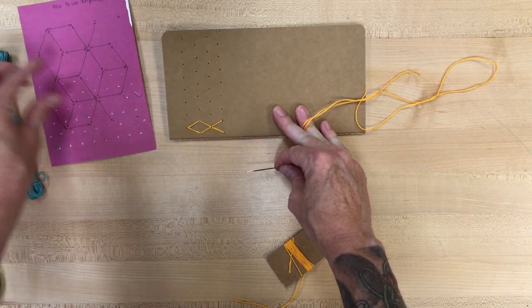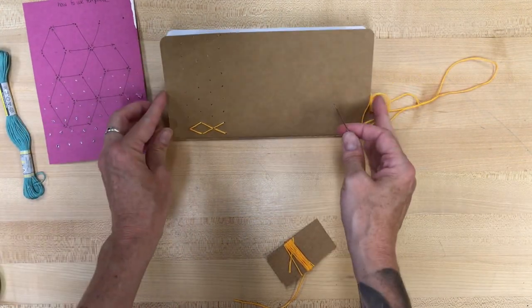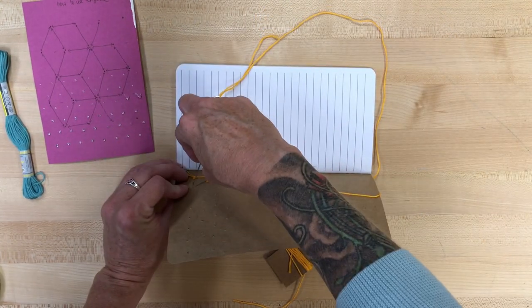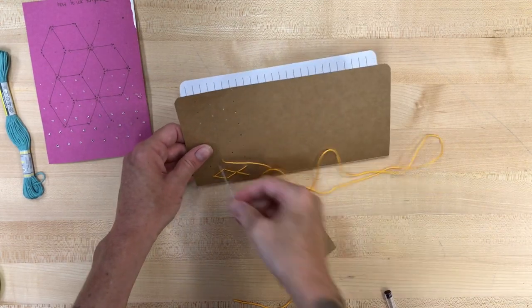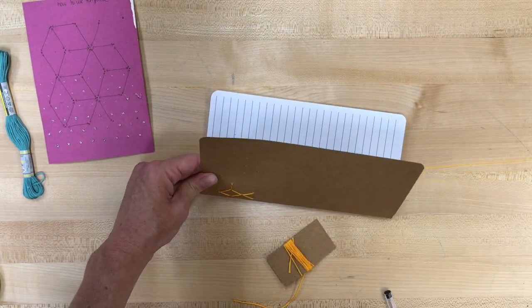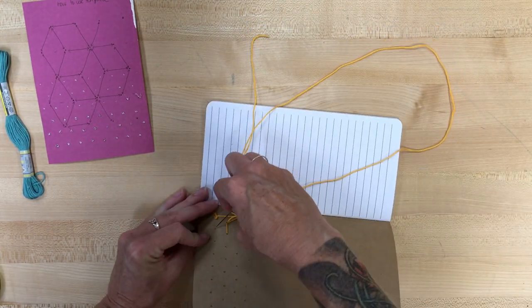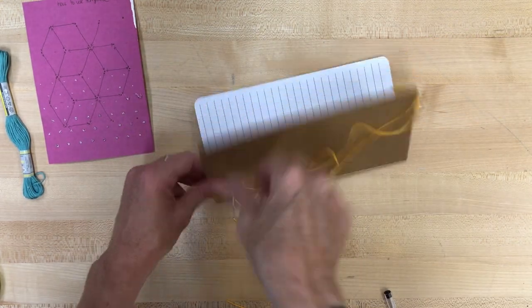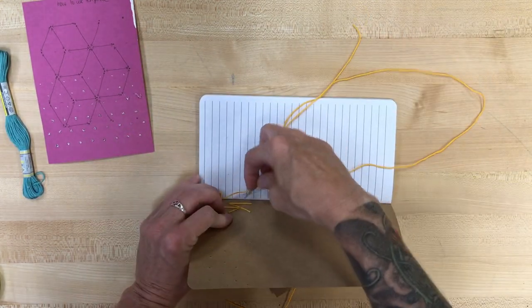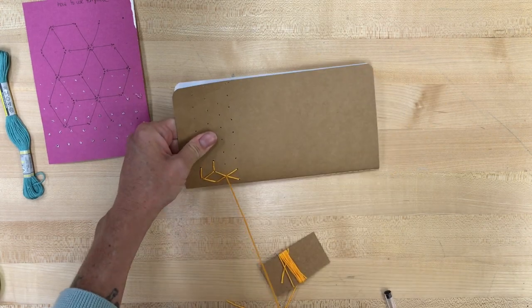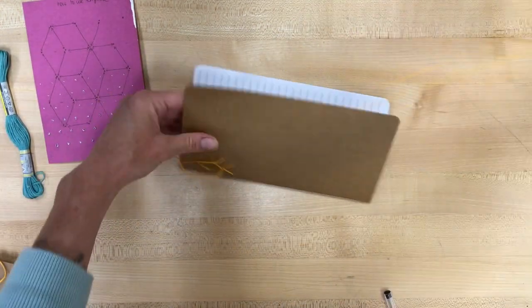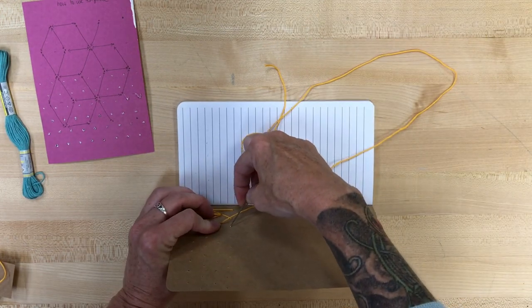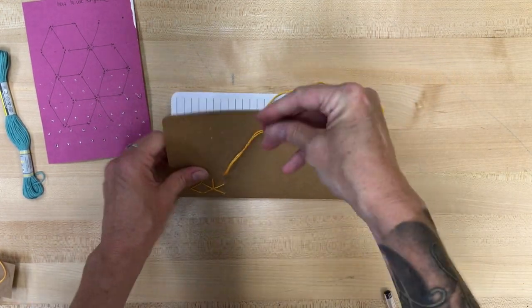And the next step in the pattern is to take these lines that are going to be going horizontally. So you'll start the hole right above one of the diamonds and sew these lines that lead right up to the diamond.